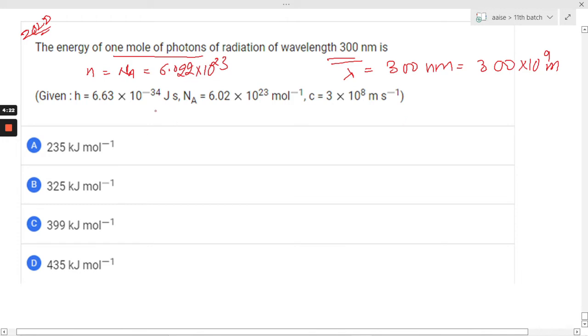So the data is given: the Planck's constant is like this, Avogadro number is this, and we are having the speed of light 3 into 10 raised to 8 meter per second.